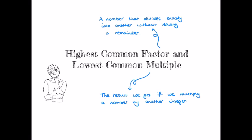In this lesson we're going to learn how to calculate the highest common factor and lowest common multiple of two or more numbers. We begin by recalling what we mean by the words factor and multiple. A factor is a number that divides exactly into another without leaving a remainder. For instance, a factor of 8 is 4, but also 1, 2, or 8. A multiple is the result we get if we multiply a number by another integer — it's a number in that number's times table.